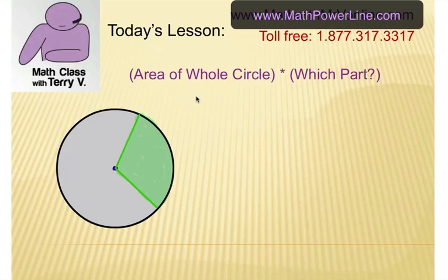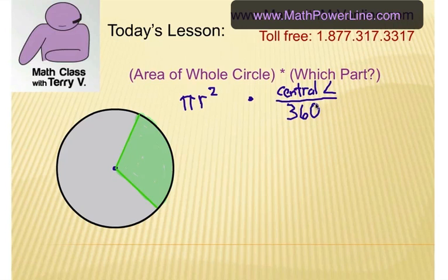So, remember that the area of a circle is pi r squared. Alright, so we just simply have to find the area of the entire circle, and then we're going to multiply it by the part which is the central angle over 360 degrees, because 360 degrees is the entire rotation of the circle.